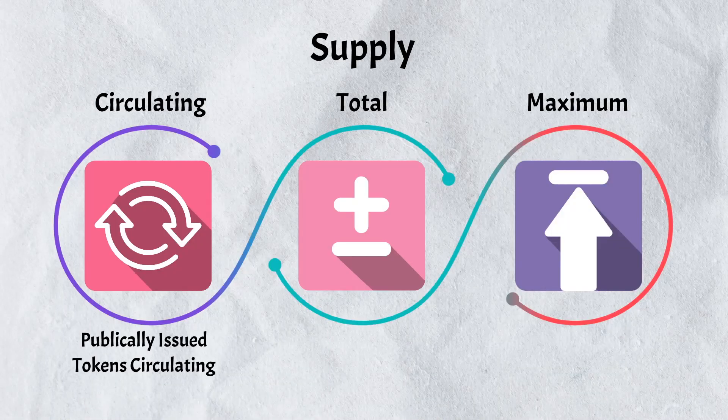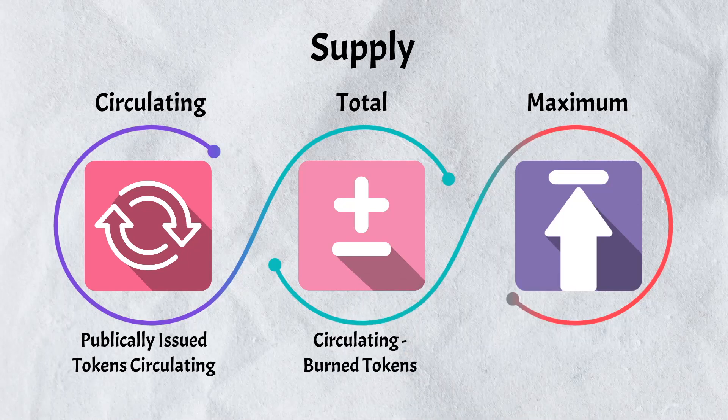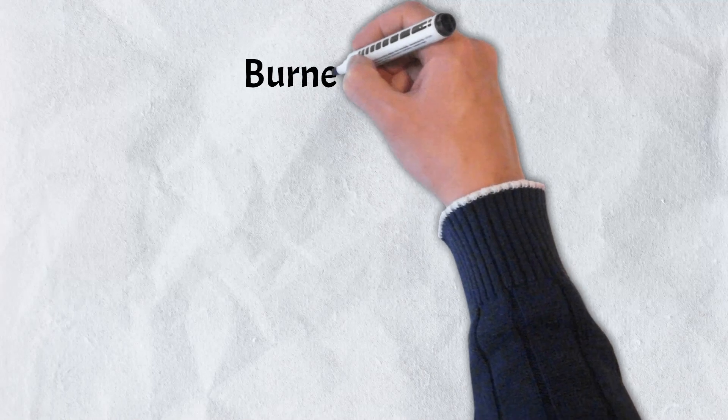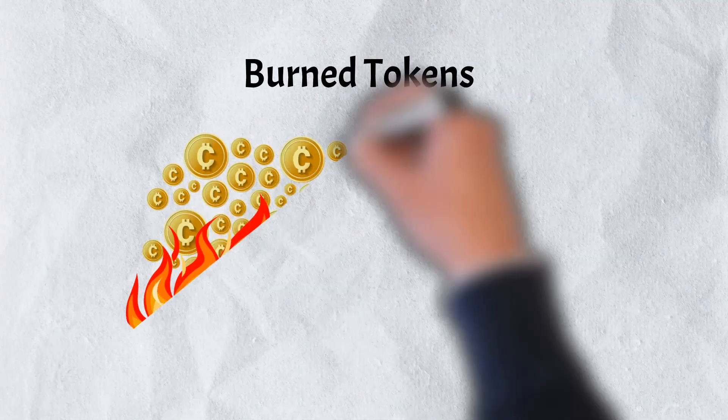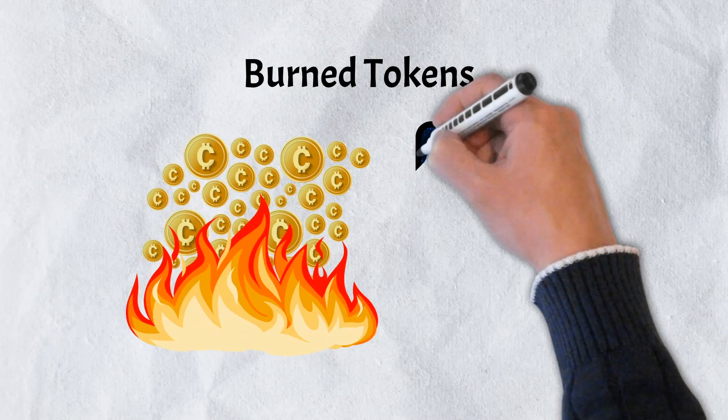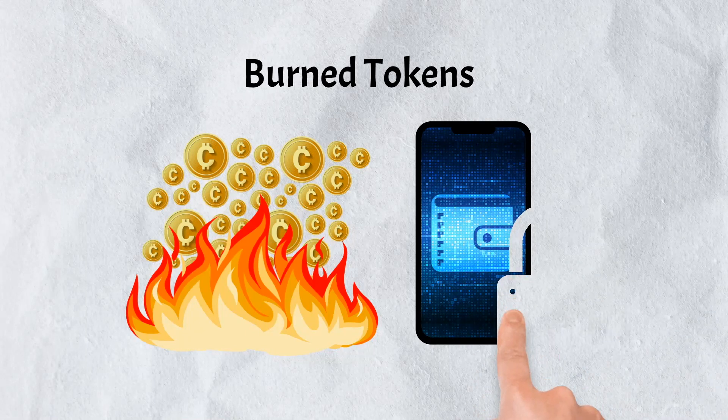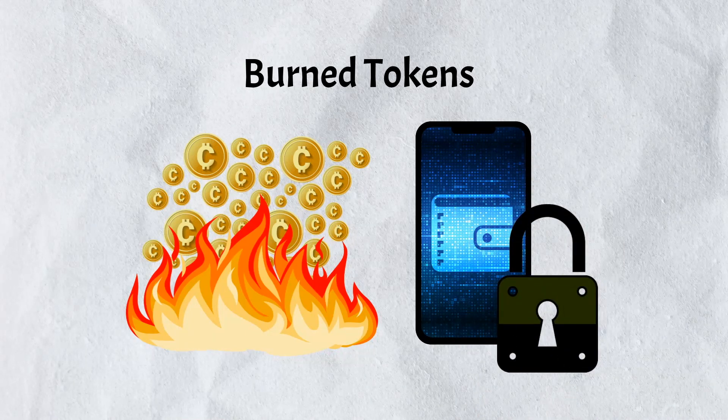Total supply, on the other hand, is the number of tokens that are currently in circulation minus all tokens that have been burned. Burned tokens refers to tokens that are permanently removed from circulation. This is typically done by sending tokens to a wallet address that cannot be accessed, ever.